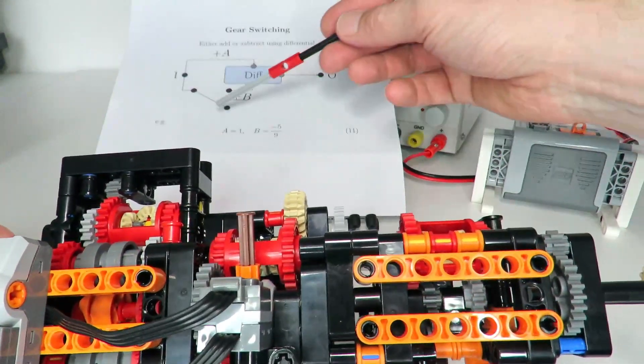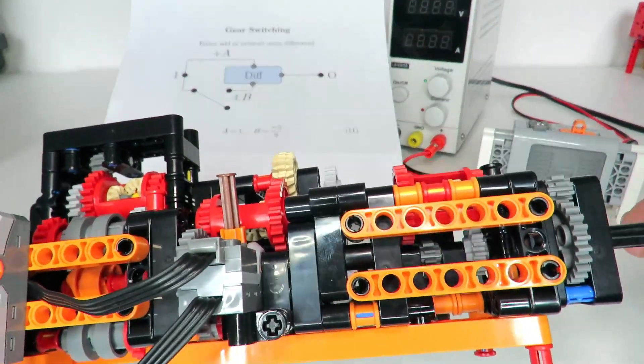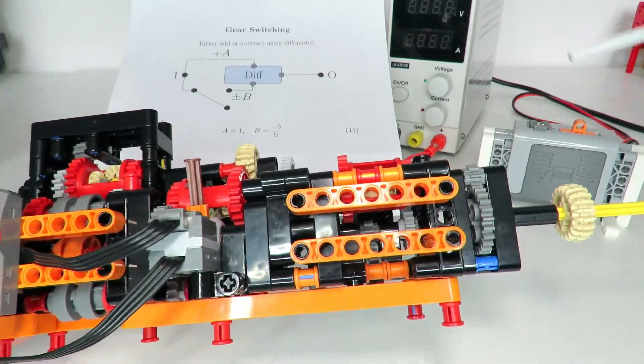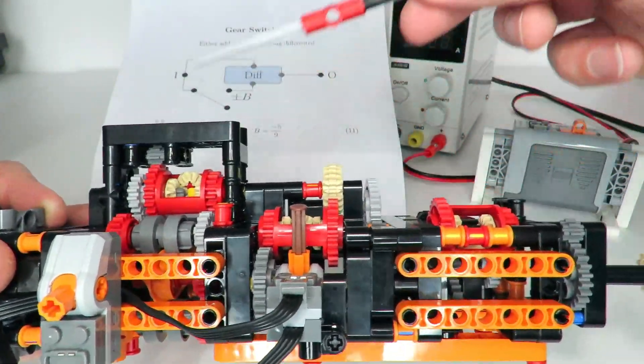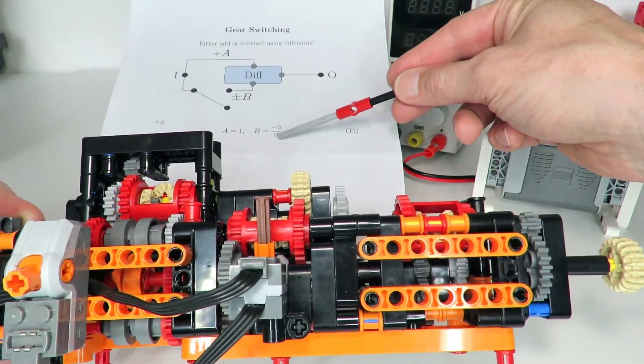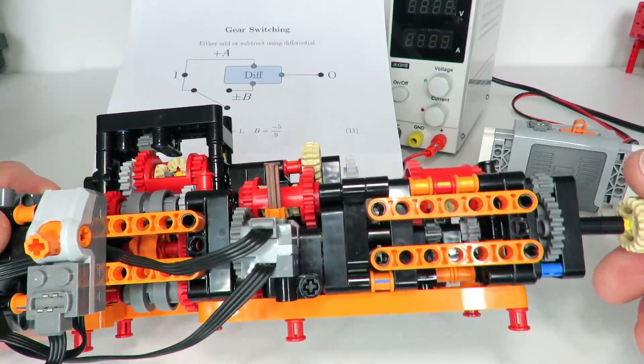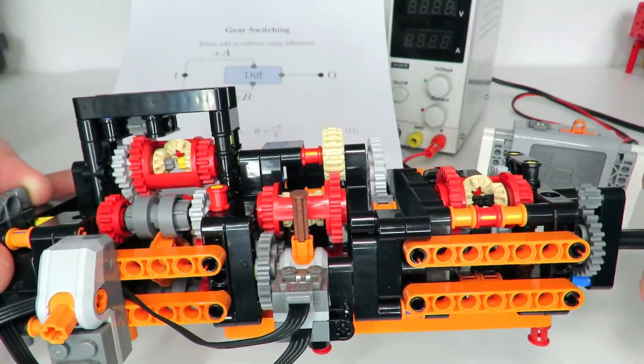So that means that when we're in gear one, the overall gear path is just A and that gives us a one-to-one ratio between the input motor and the output. Then when gear B is engaged through that orange rotary catch, we end up adding minus five ninths to the overall output, which gives us four ninths at the output for the secondary gear when the gears do switch due to a high torque load.